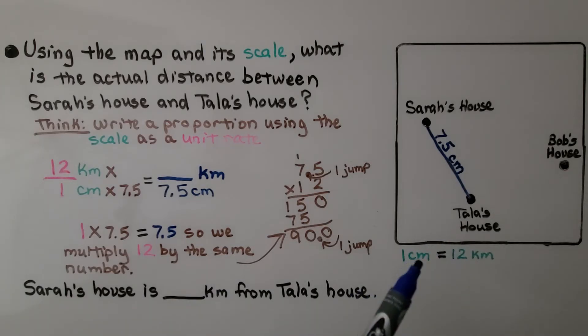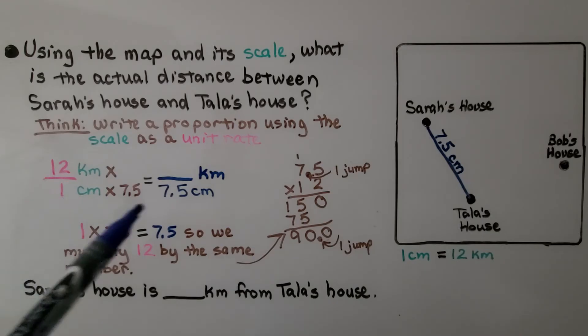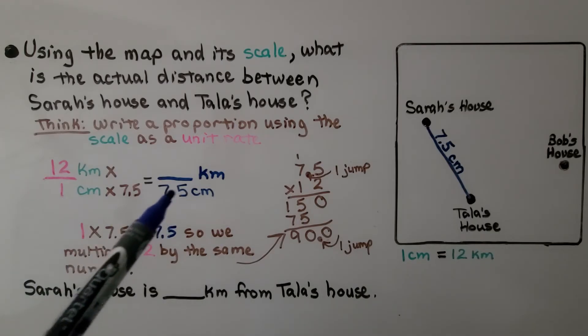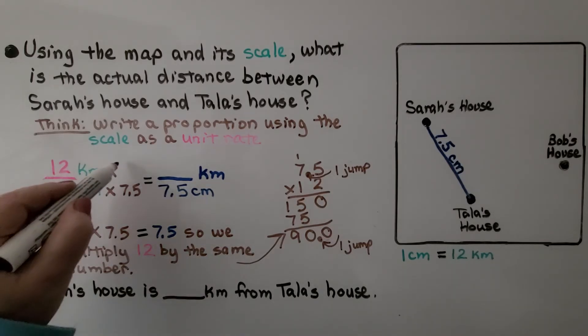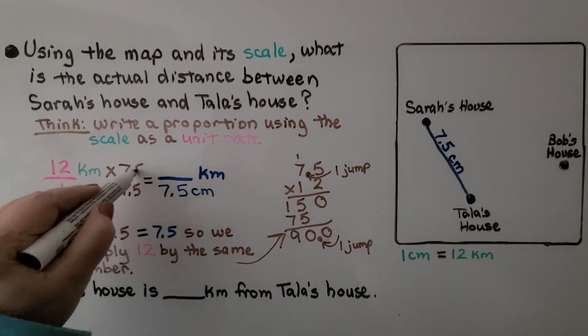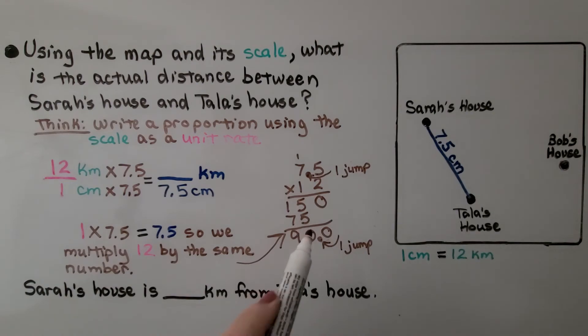We have 12 to 1. That's our unit rate. And we need this 1 centimeter to equal 7 and 5 tenths centimeters. So we're going to multiply it by 7.5. Which means we need to multiply 12 times 7.5. We do a little math on the side. We have one decimal hop, one jump, in the problem.